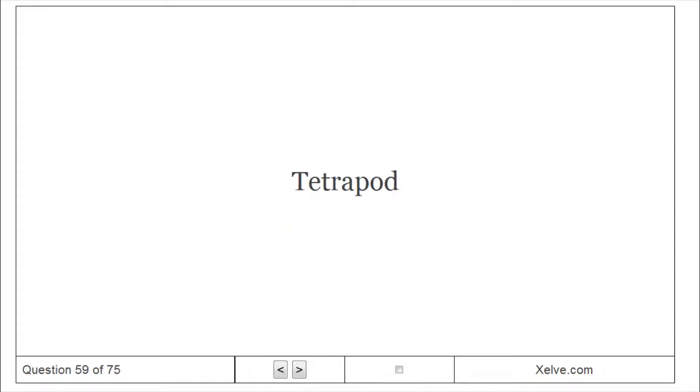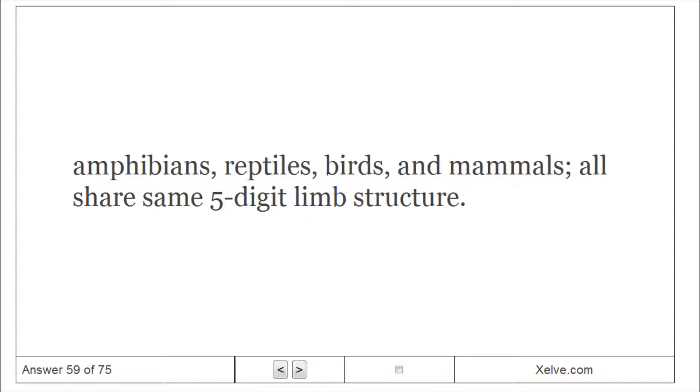Tetrapod: Amphibians, reptiles, birds, and mammals all share same five-digit limb structure.